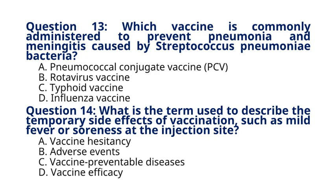Question 14. What is the term used to describe the temporary side effects of vaccination, such as mild fever or soreness at the injection site? A. Vaccine hesitancy. B. Adverse events. C. Vaccine-preventable diseases. D. Vaccine efficacy. The correct answer to question 14 is option B, adverse events. Adverse events refer to the temporary side effects that may occur following vaccination, such as mild fever, soreness, or redness at the injection site.